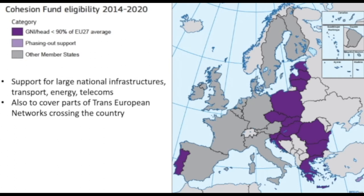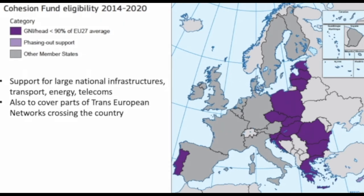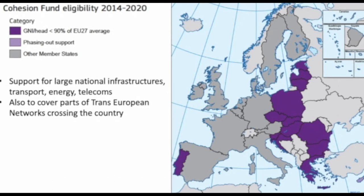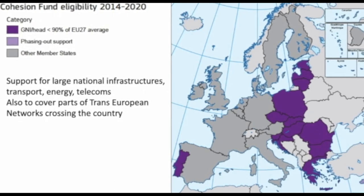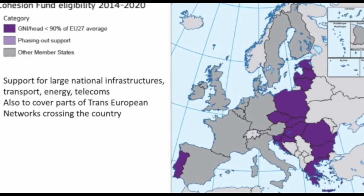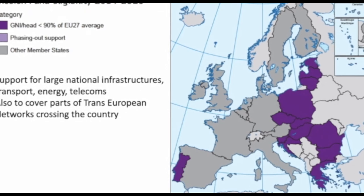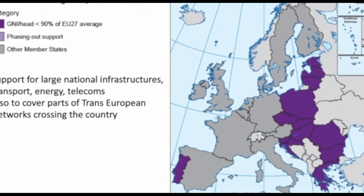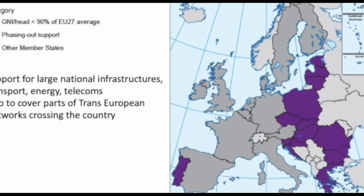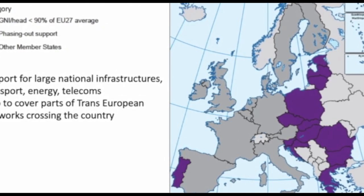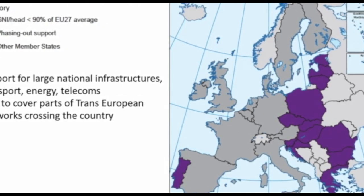Looking at cohesion fund eligibility, this covers countries at 90% of EU average level or lower, along with some phasing-out transition countries such as Cyprus. The cohesion fund gives support to country-wide infrastructure — large national infrastructure in transport, energy, and telecoms — and some of it also goes to the national part of Trans-European Networks, supporting the Connecting Europe Facility and reducing the need for funding at that budget line.